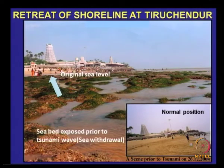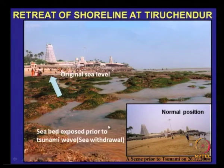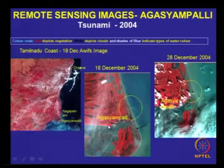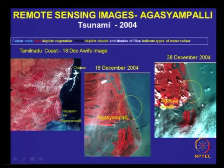This is the retreat of the shoreline at Tiruchandur, south Tamil Nadu — the sea bed exposed. This is the original scene prior to the tsunami on the same day, and all this area has been exposed. Along the Tamil Nadu coast, these remote sensing imageries show how it has inundated various locations at different places.